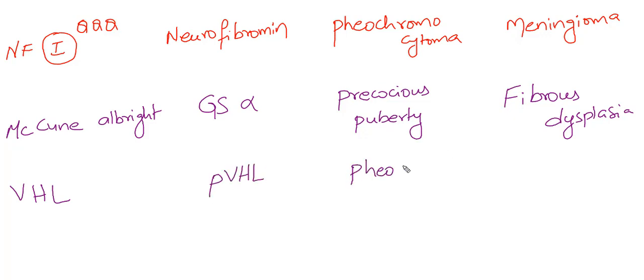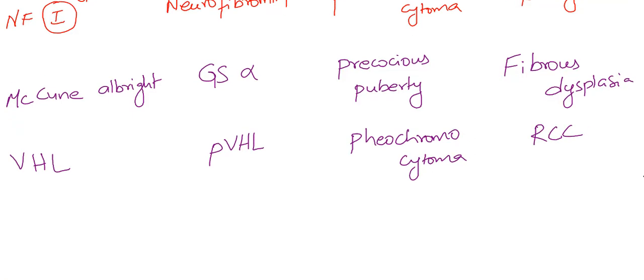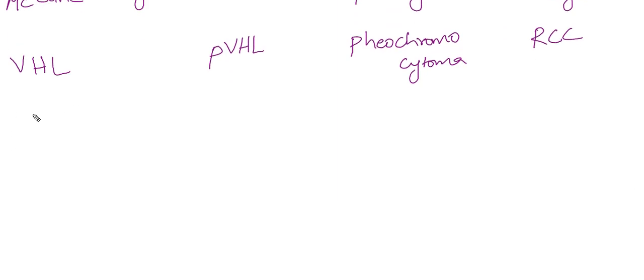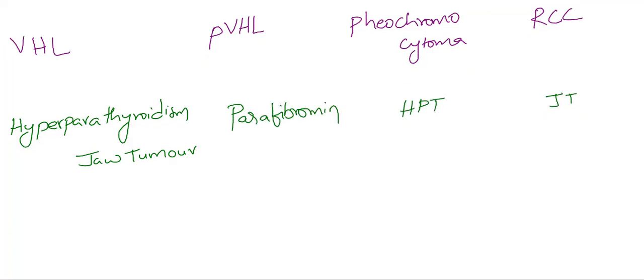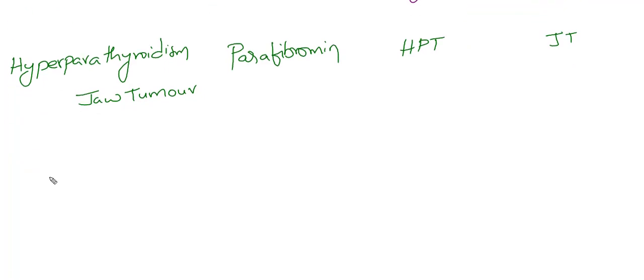The fifth one is hyperparathyroidism-jaw tumor syndrome. Parafibromin is the gene mutated. The endocrine abnormality is hyperparathyroidism, and the malignancy is jaw tumor (mandible tumor).